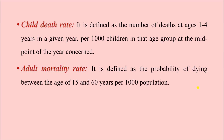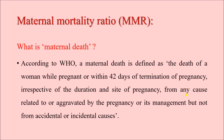Next are child death rate and adult mortality rate. Child death rate is the death rate in the age group of 1 to 4 years per 1000 children of the same age group — essentially the age-specific death rate for 1 to 4 years. Adult mortality rate is defined as the probability of dying between the ages of 15 to 60 years per 1000 population.